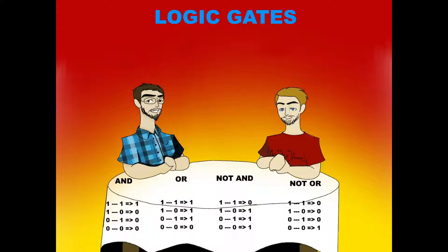As humans, our eyes typically can't distinguish separate frames around 30 frames per second. Now, there is a huge difference in frames per second in terms of control versus just visual perception. When you're actually controlling something like a video game, the higher the FPS, the smoother the inputs and controls are. FPS stands for frames per second. Especially in games where you need fast reactions, higher frames per second makes for smoother controls, and playing at 60 versus 30 FPS is noticeable.